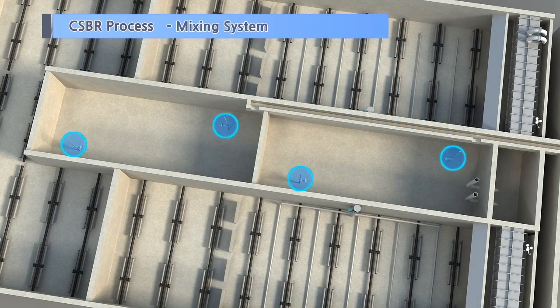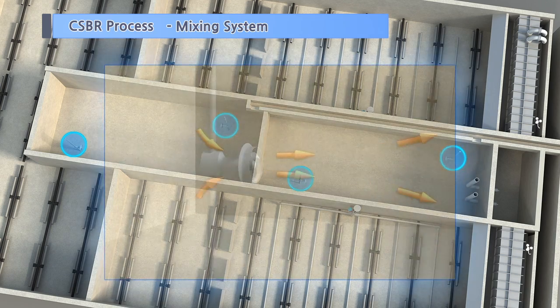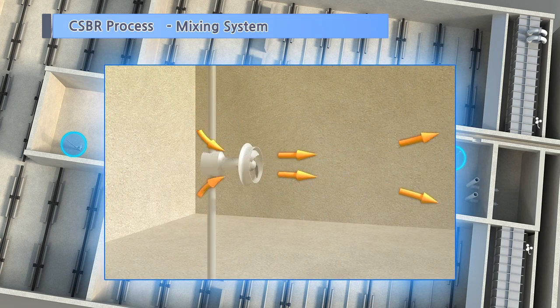The mixing system is installed in the anoxic and anaerobic cells, which uniformly mixes the sludge that did not settle in the cells.